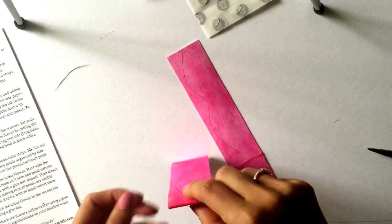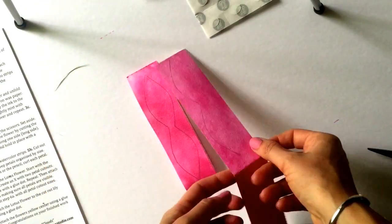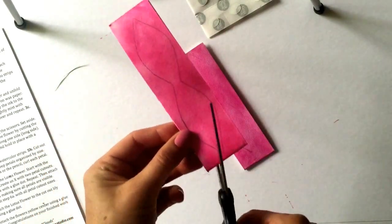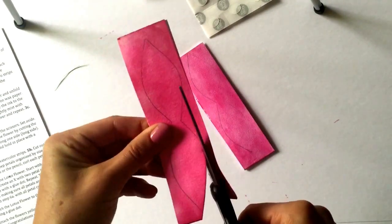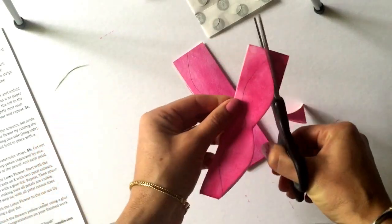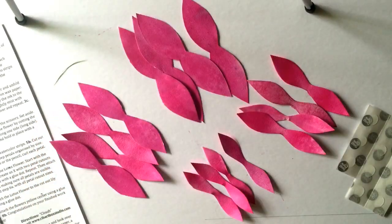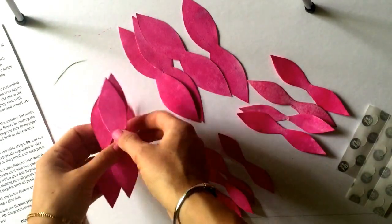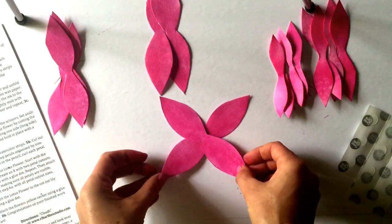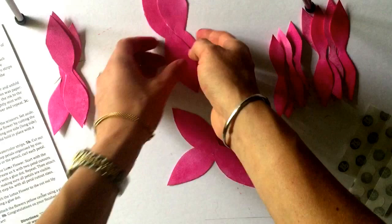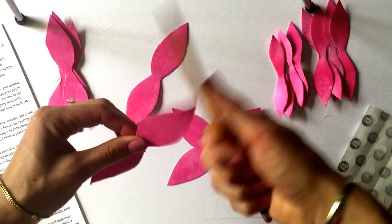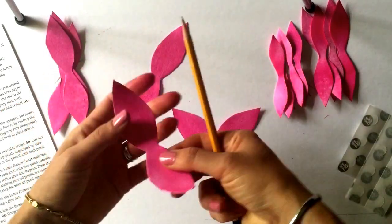Step 5a, refold the colored watercolor paper strips. Step 5b, cut out all of the petals. Try to keep the petals organized by size. It will make things easier for the next step. Step 5c, using the scissors or the pencil, curl each petal.